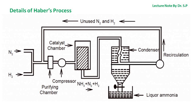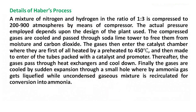In the catalyst chamber, ammonia gas is formed along with unreacted nitrogen and hydrogen, which are passed into a condenser. The unused nitrogen and hydrogen gas is recirculated, and the liquefied ammonia is collected from the bottom.